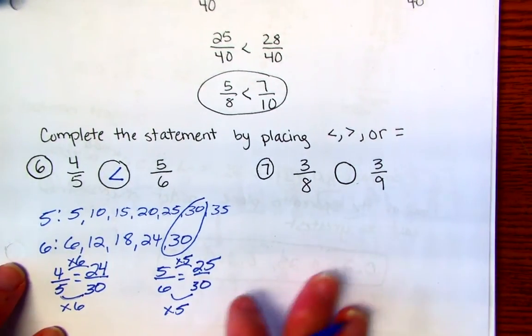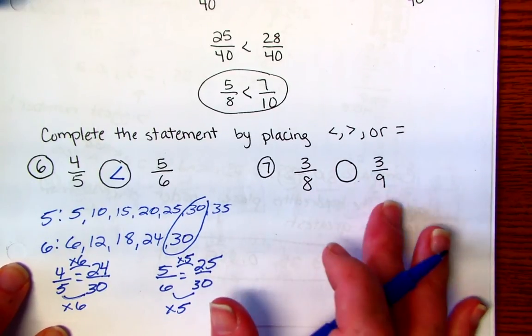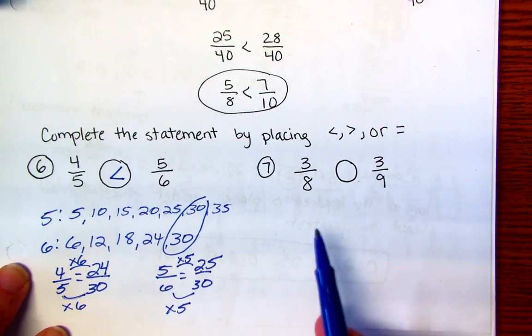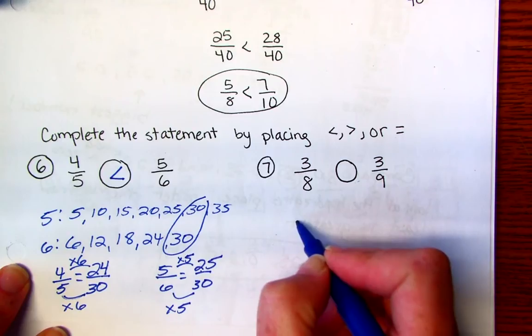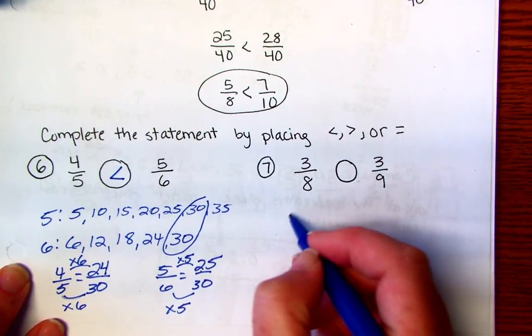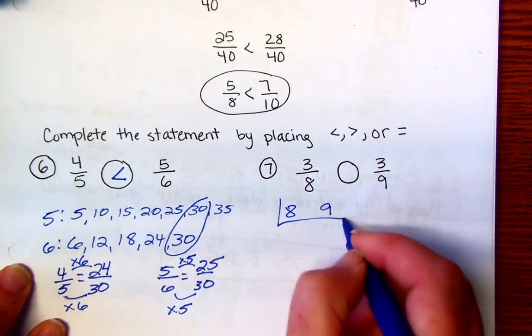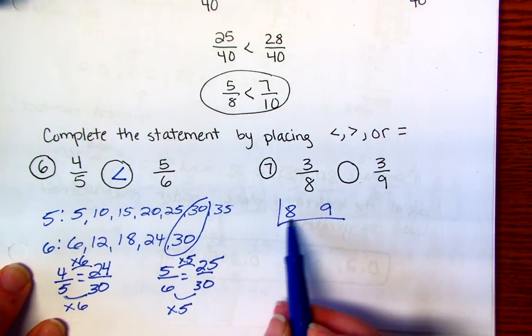Now we're going to do that same process with 8 and 9 because they're not the same denominator, but in order for me to compare them, I need to have the same denominator. I'm going to show you another way though to find your least common multiple. So you have 8 and 9. Now there's nothing that's in common between these, but there's numbers I can divide out by.